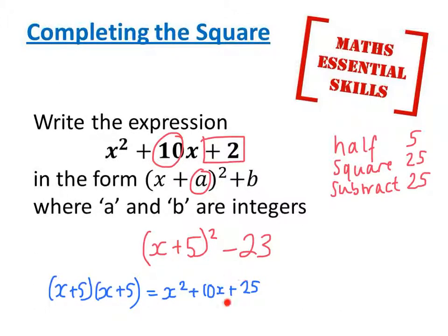I don't want it to be x + 25, and that's why I've then got to do the minus 23. However, as long as you remember to half that number to give you the first number, square it, 25, and then subtract it from here, you'll have got your marks.